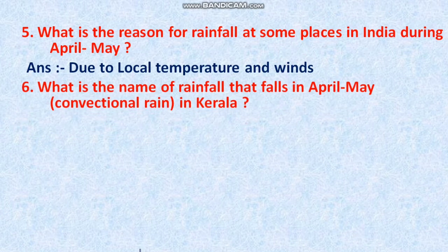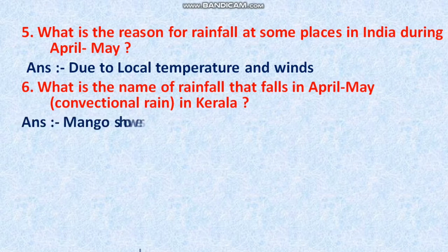Question 6: What is the name of the rainfall that falls in April and May in Kerala? The answer is Convectional Rain in Kerala. This rainfall in Kerala during April and May is also known as Mango Showers.